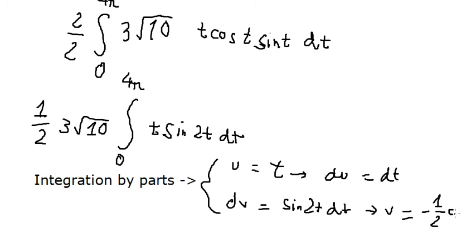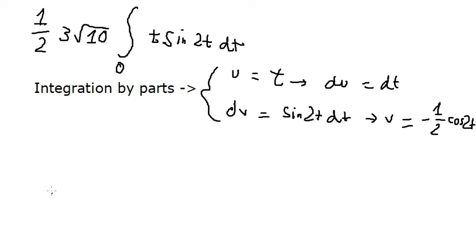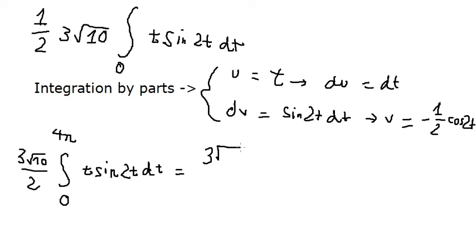So we get v equals negative 1 over 2 cosine 2t. So we get 3 multiplied with the square root of number 10 over 2, the integral from 0 to 4 pi, t sine 2t.